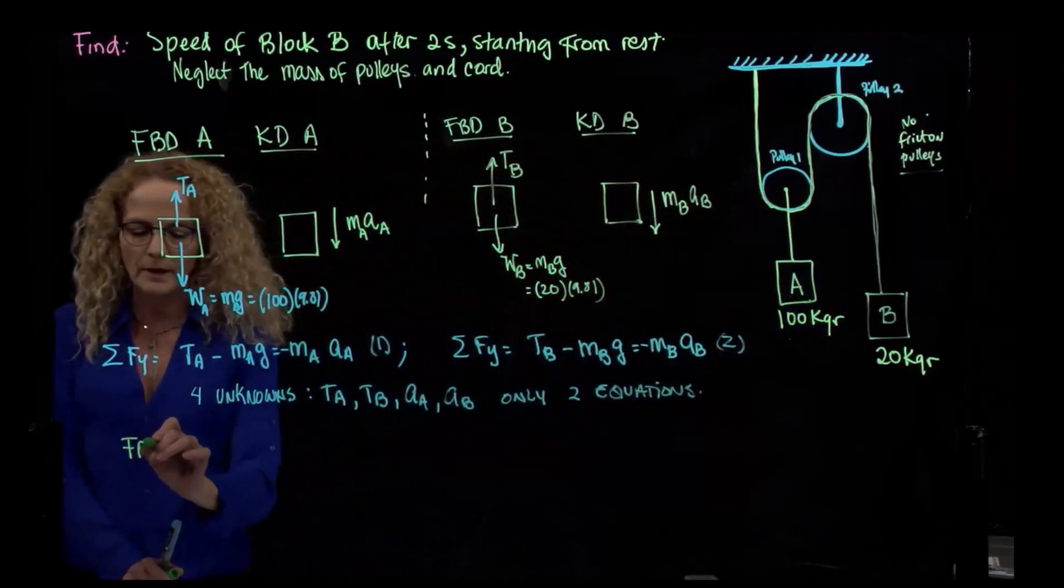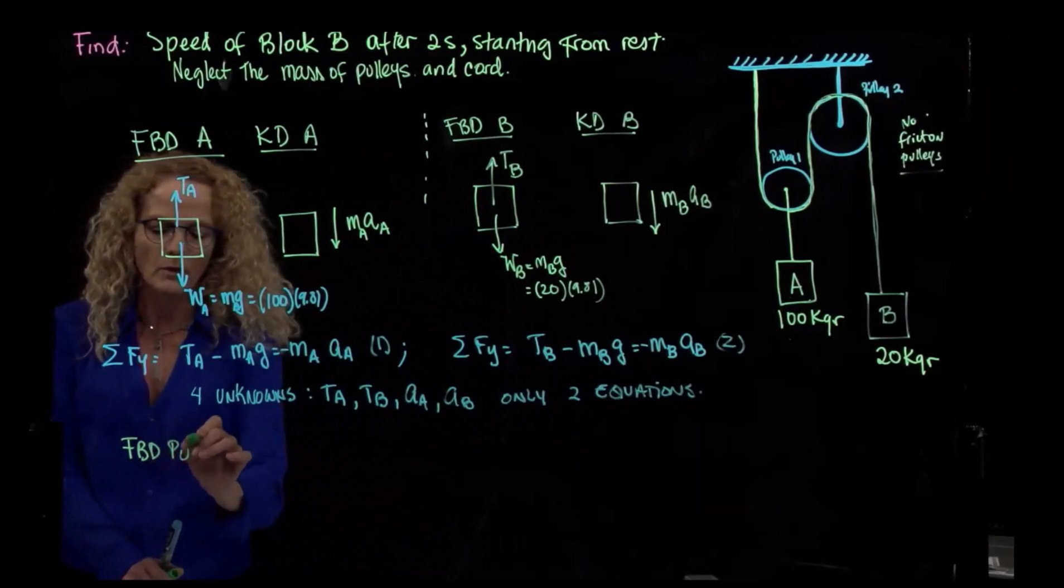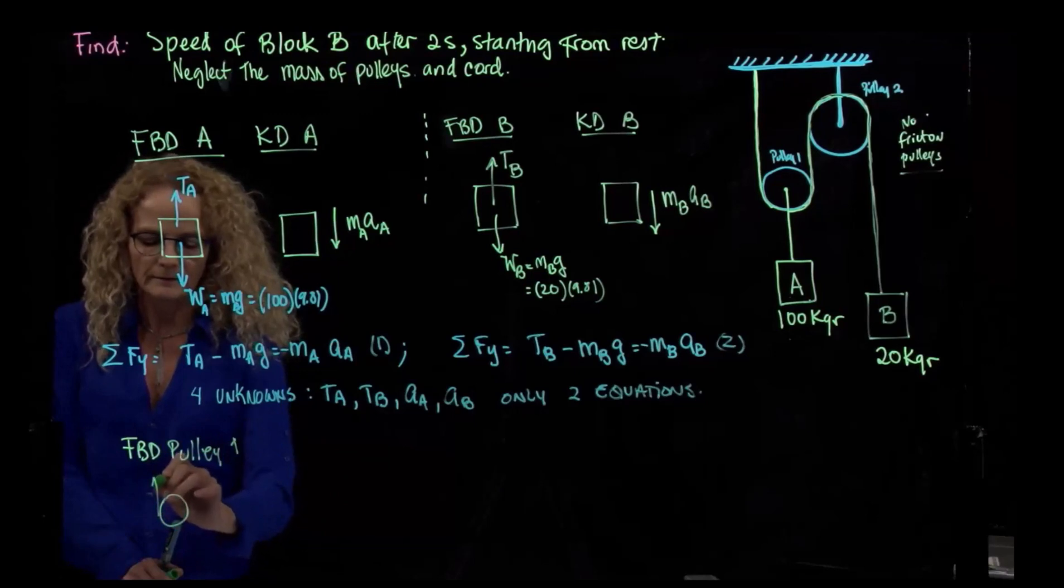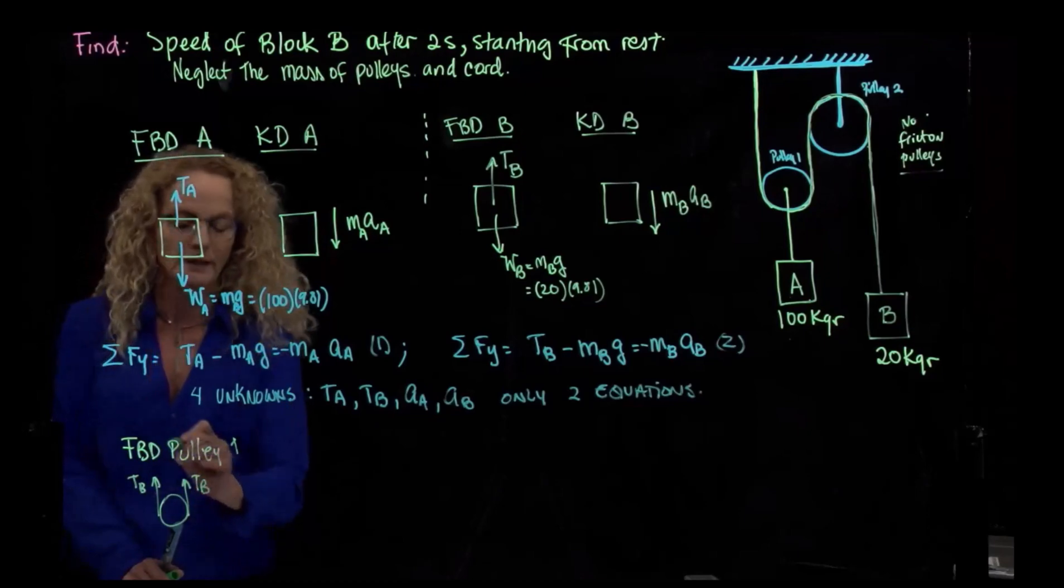Free body diagram of pulley one. And here, I said that this is tension B. And since I don't have friction, this is tension B as well.